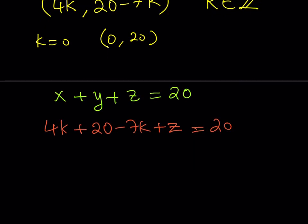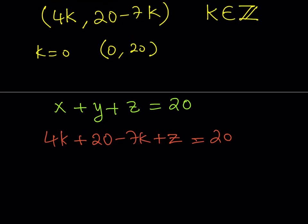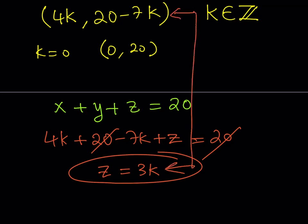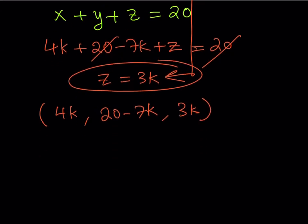If you solve for z, notice that x + y is going to give you 20 - 3k. The 20 is going to cancel out. So from here, you should be getting z = 3k. Now I was able to get all the variables together. Let's write down the solution as an ordered triple. x would be 4k, y would be 20 - 7k, and z would be 3k. Interesting, right? So x is always a multiple of 4, z is always a multiple of 3, and y is a little different.